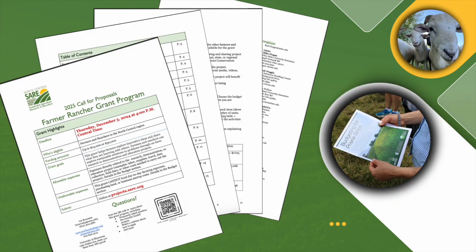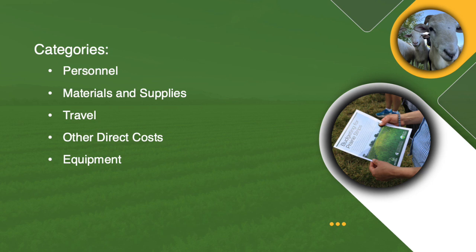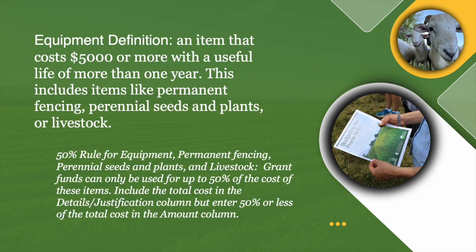Look in the call for proposals for details, but in general for category you're going to choose between personnel, materials and supplies, travel, other direct costs, or equipment. An important note on equipment is what we call the 50% rule. Equipment is defined as any item that costs $5,000 or more with a useful life of more than a year. So if you've got something that fits that category and you need it for your research or demonstration project, you can include up to 50% of that cost in your SARE budget.